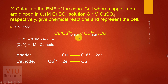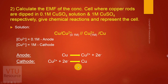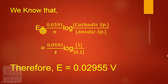If cell representation is given, cell reactions can be written directly. At anode: Cu → Cu²⁺ + 2e⁻. At cathode: Cu²⁺ + 2e⁻ → Cu. When cell representation is given it is easier to write the reactions. The net reaction is zero.